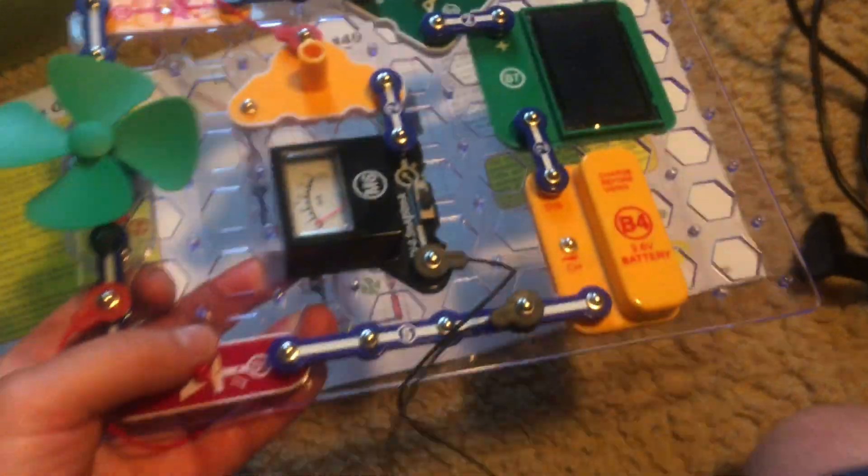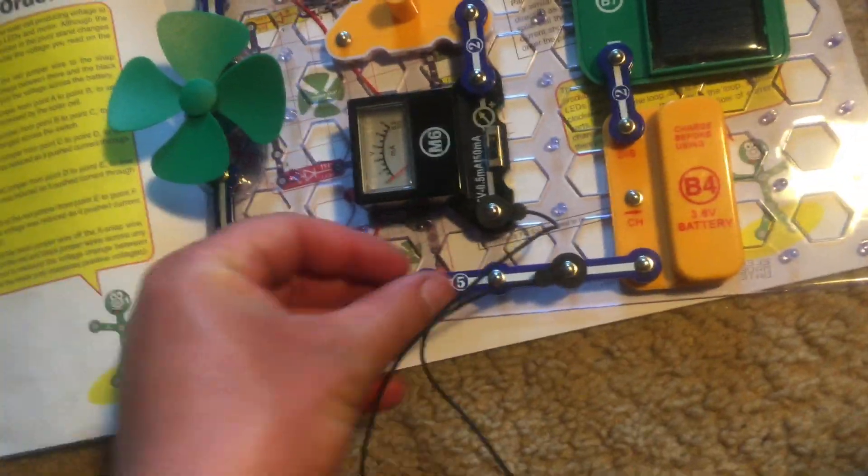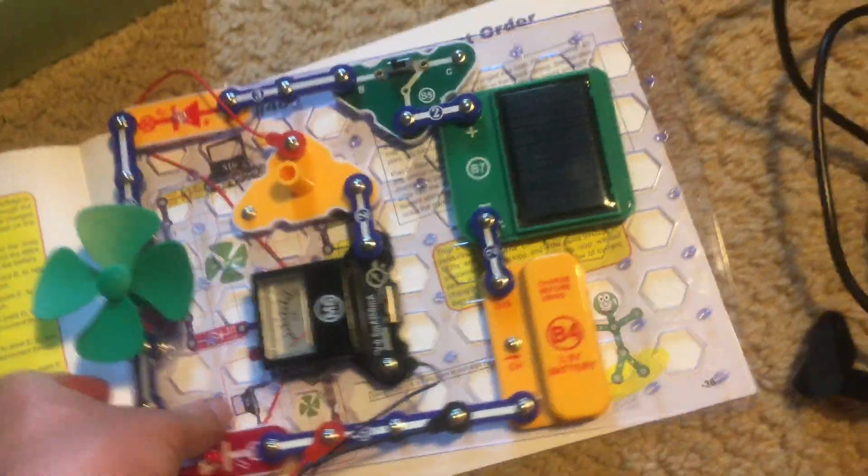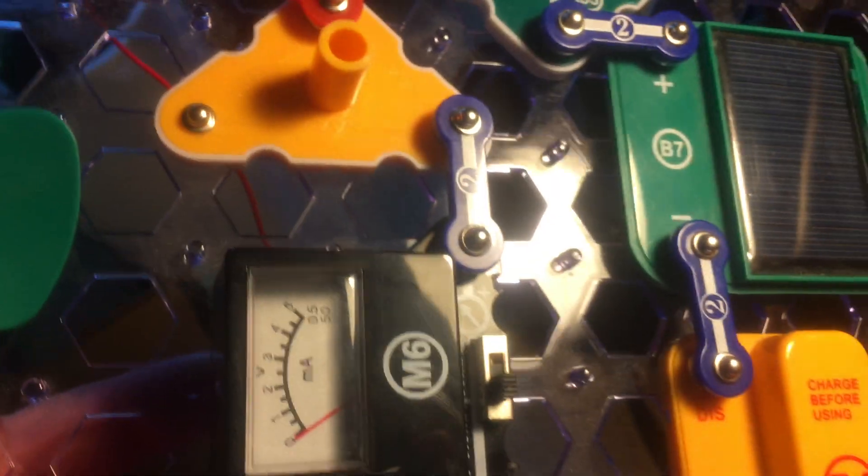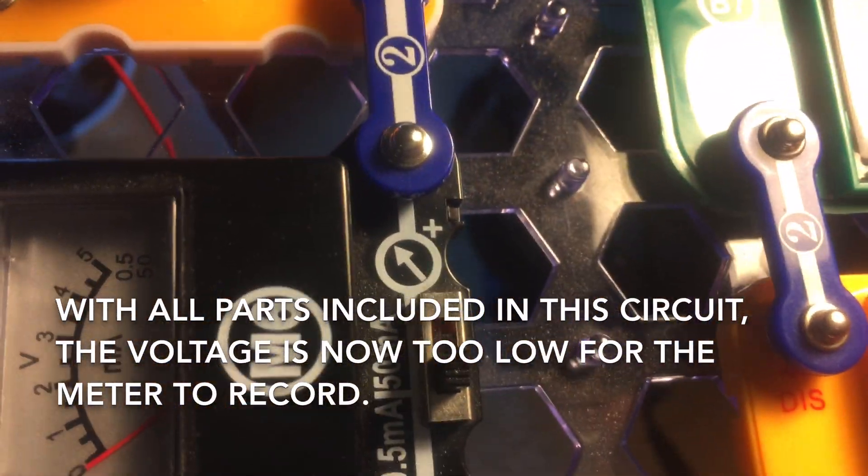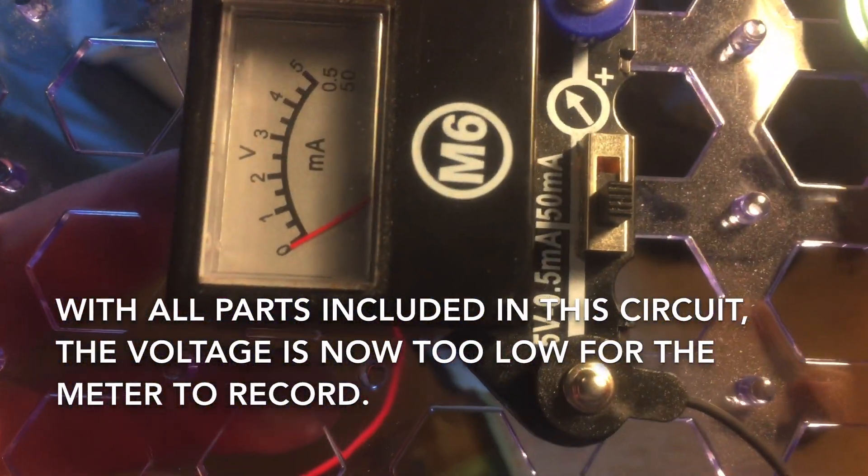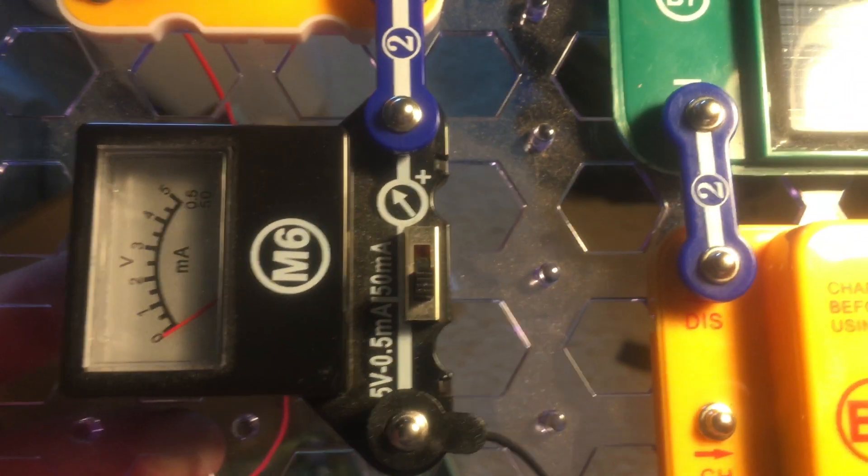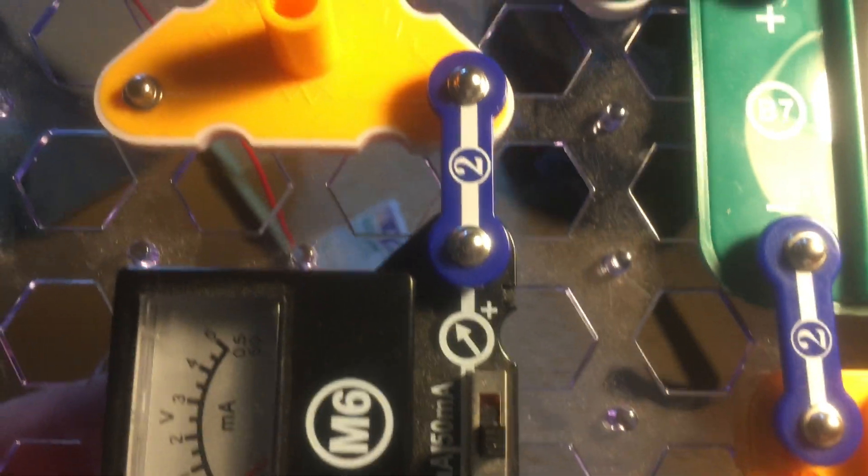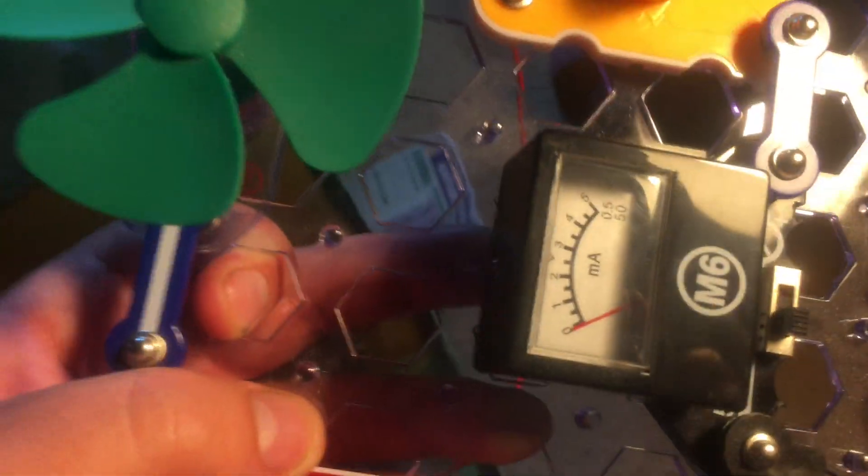And finally, for point F, right here, the meter will read basically nothing. You can see how much voltage is flowing through. There are a lot of devices that greatly limit the voltage through the circuit.